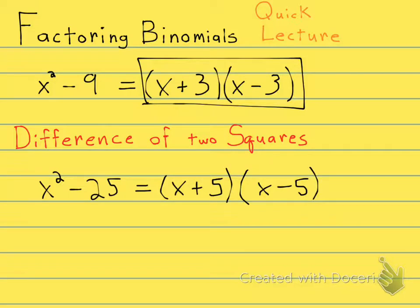What about x squared minus 49? The square root of 49 is 7. So that's x plus 7, x minus 7.